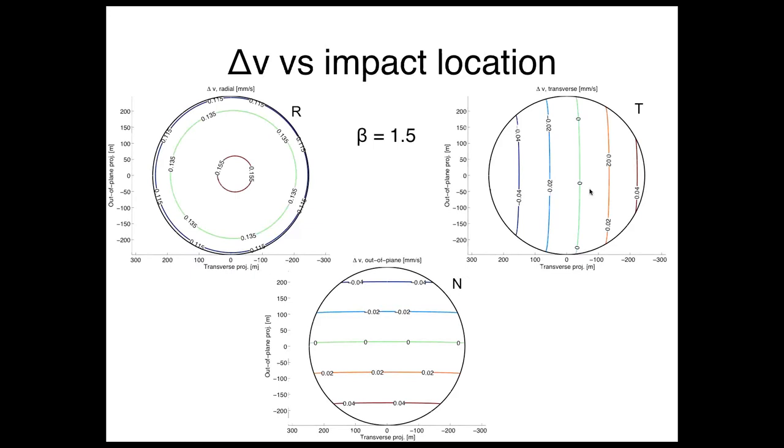How can we understand what this does to Bennu's trajectory? Depending on where you hit, you're going to get a different delta V on the asteroid, and it also depends on the value of beta. Here's an example for beta 1.5. For our simulations, the impactor is coming essentially from the sun, in the radial direction. Here's your radial, transverse, and out-of-plane or normal deflection in millimeters per second. Here is your 0.15 or 0.16 for the direct hit, and you have 0 and 0 for transverse and normal.